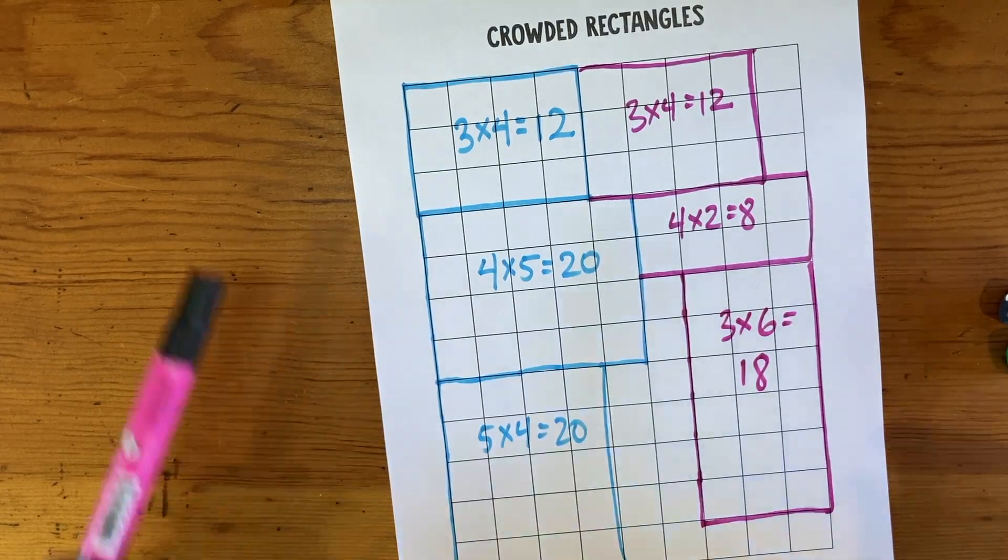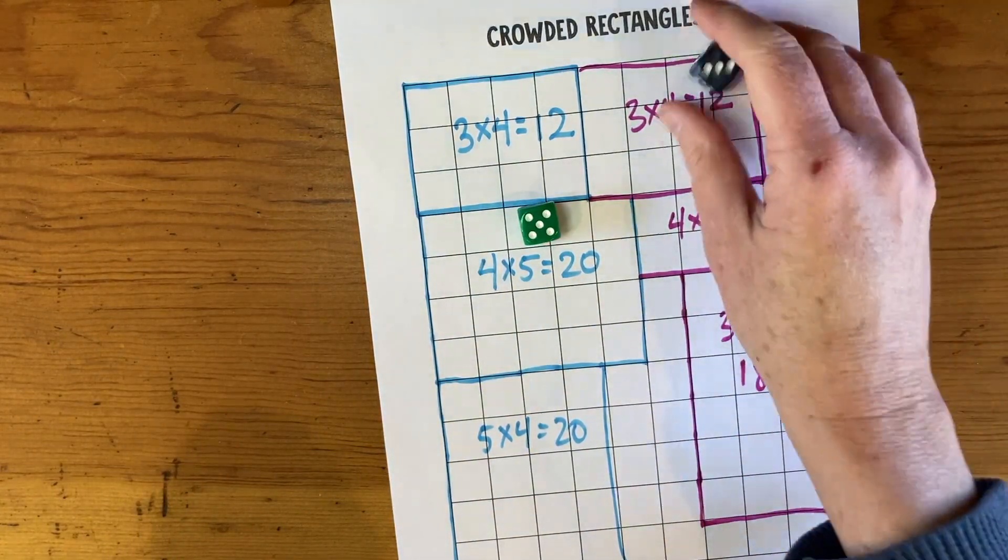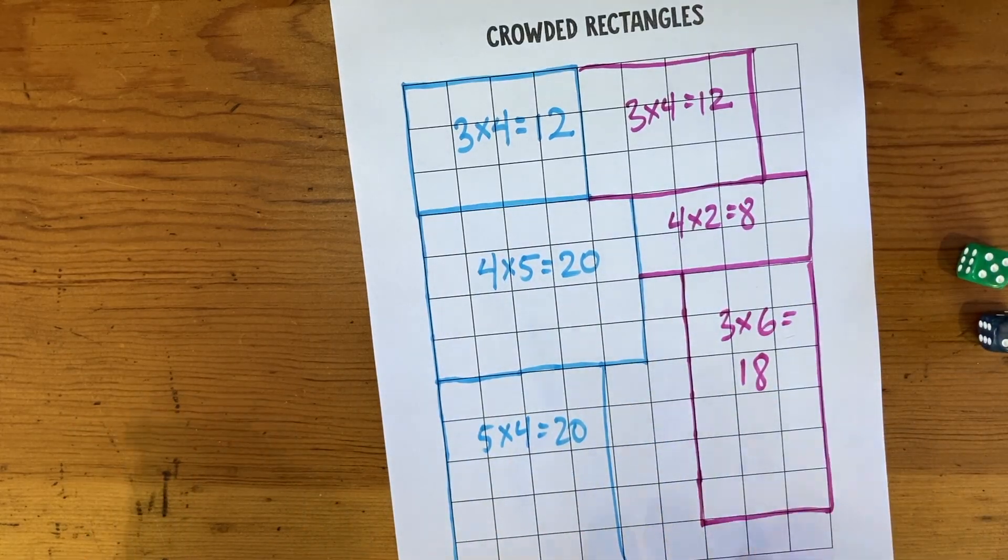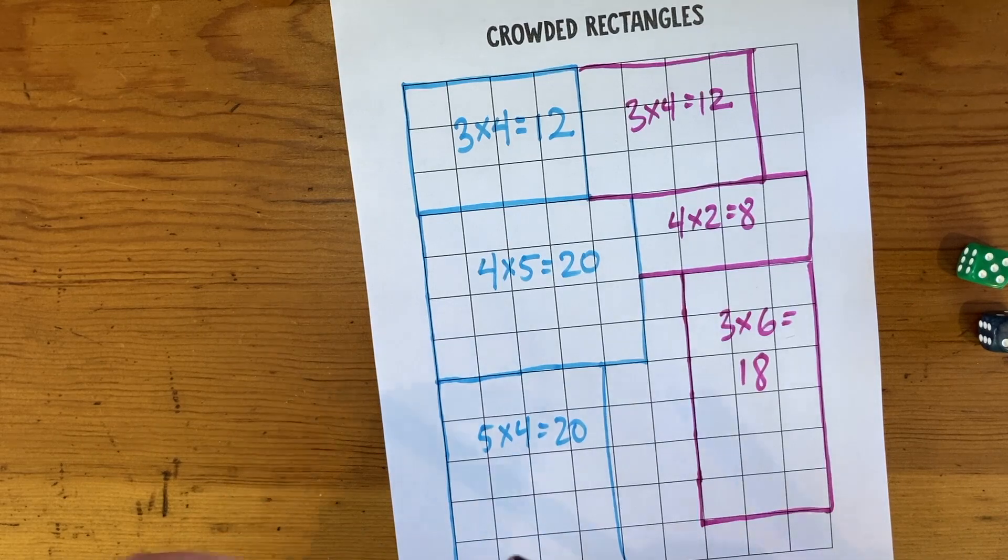Let's see if blue can fit anything in here. Five, five, five times three is not going to fit there, so our game ends right there. And now we just need to add up the points.